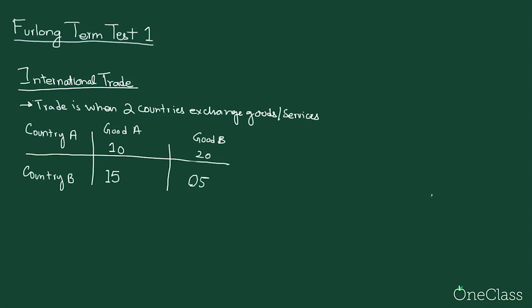Here we have two countries, country A and country B, which produce good A and good B. Country A can either produce 10 units of good A or 20 units of good B, and country B can either produce 15 units of good A or 5 units of good B.